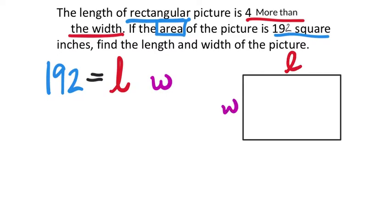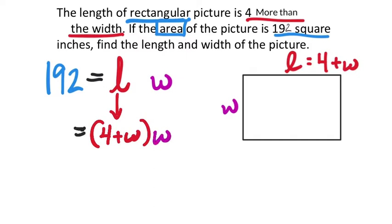But up here, it tells us that the length is the same as 4 more than the width. Now you could write 4 plus W. You can even write W plus 4 because it's addition and order doesn't matter for addition. So I'm just going to leave it like this with 4 plus the width, and then I'll get rid of my L here. And what I'm going to do is I'm going to replace it with 4 plus the width. Now that's still multiplied by W, and it still equals the 192.